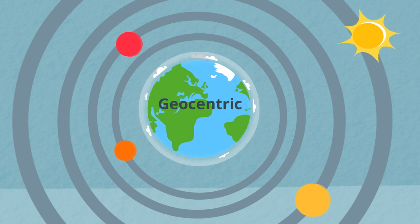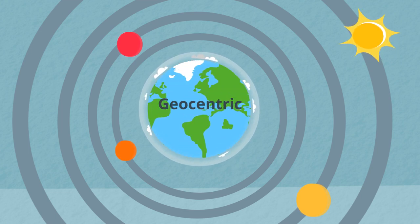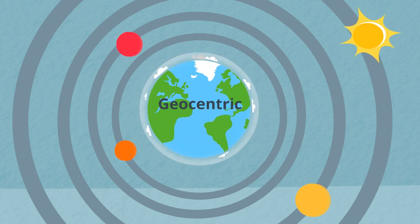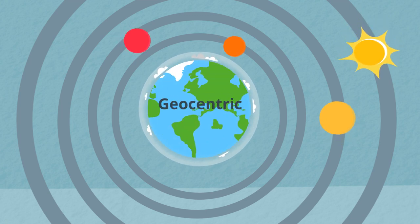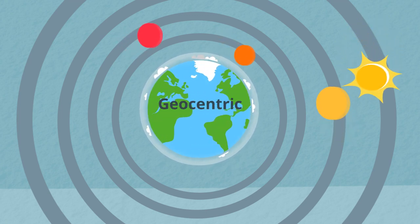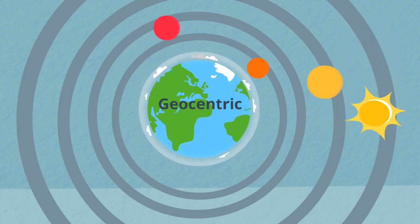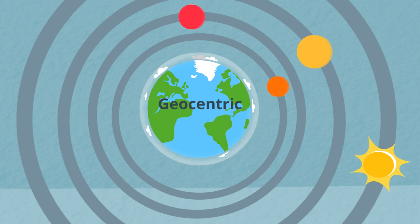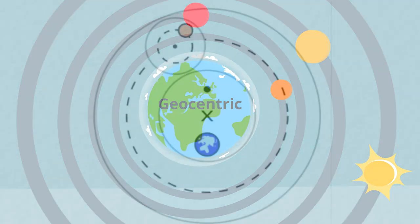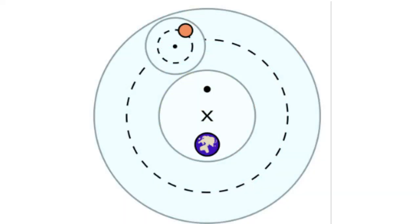However, there were some problems. For example, sometimes the planets appeared to be going backwards, or to have a retrograde motion. In order to explain this, small orbits called epicycles — which are orbits inside the orbit — were proposed to help explain this backwards motion.